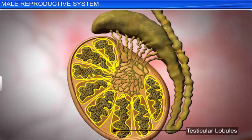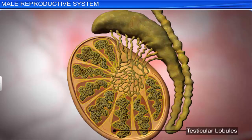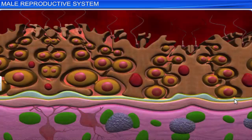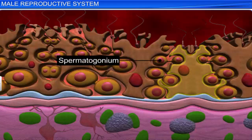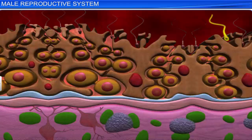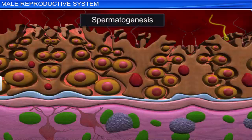Each lobule in turn contains 1 to 3 highly coiled seminiferous tubules. The lining of each seminiferous tubule is called the germinal epithelium, and contains the male germ cells known as the spermatogonia, and Sertoli cells. The male germ cells undergo meiotic division to form mature sperm cells. This process is called spermatogenesis.